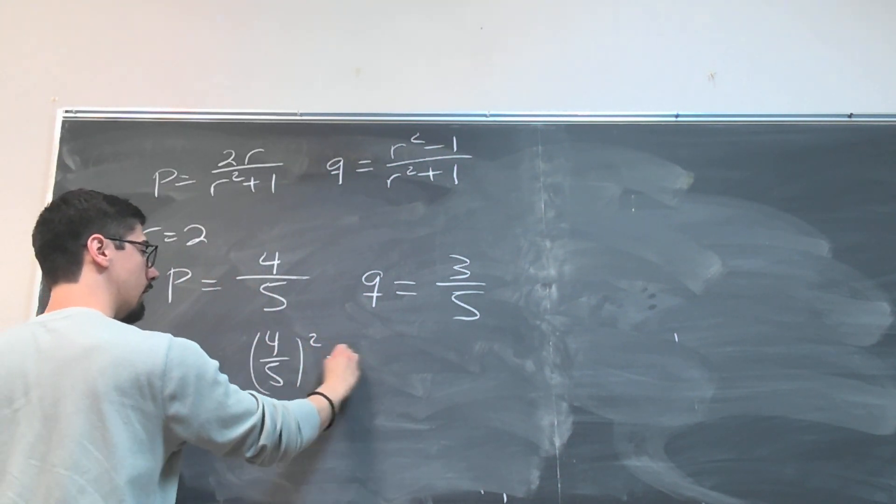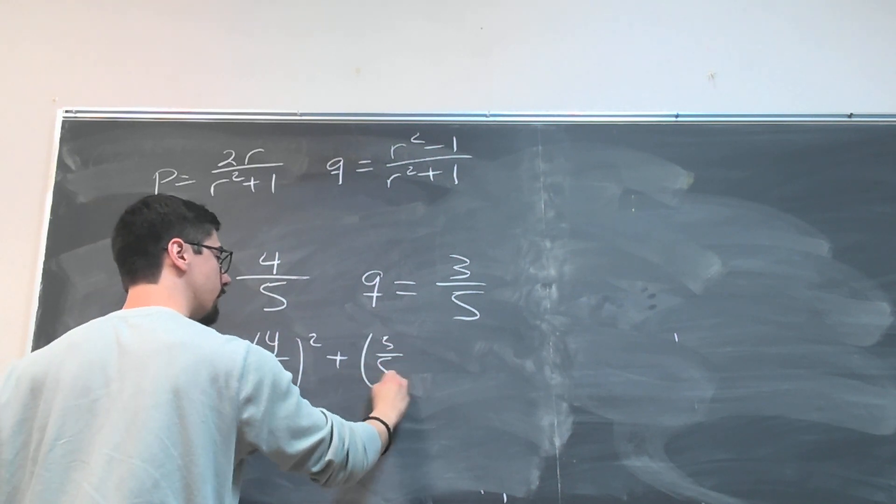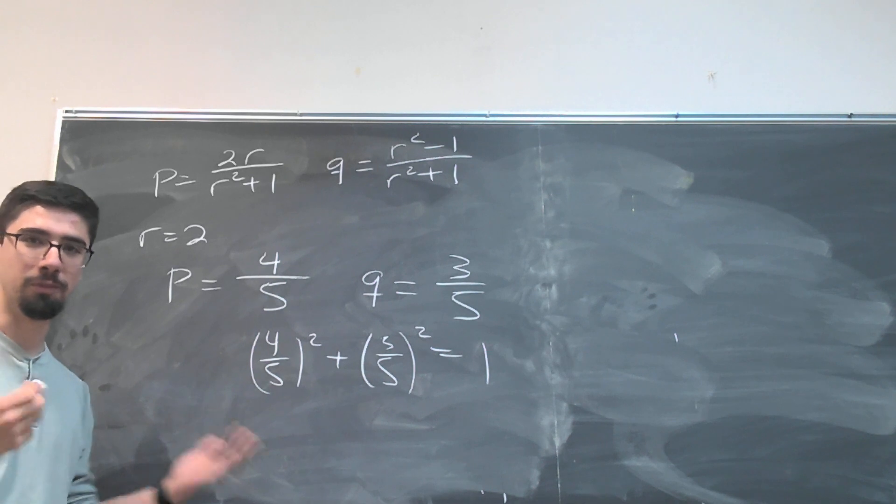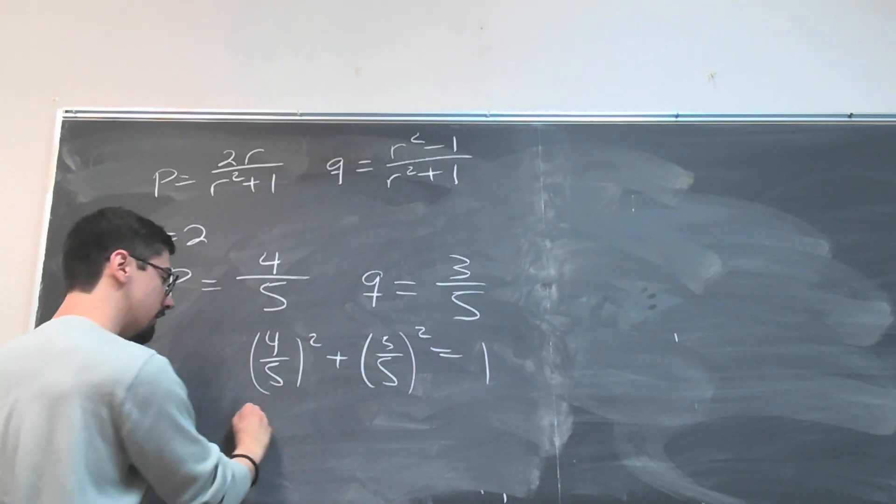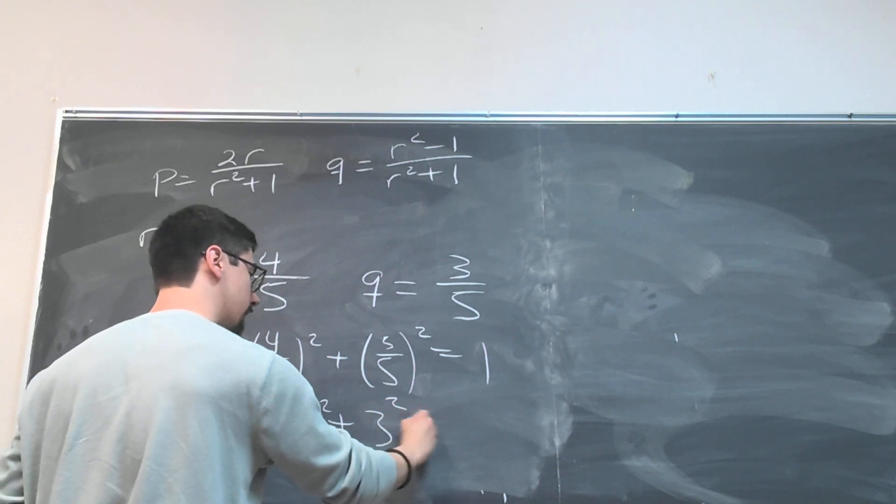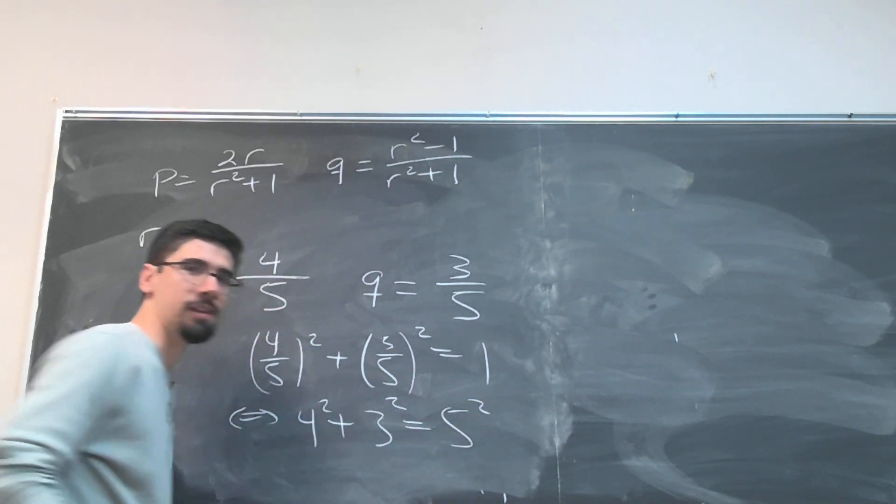And so this gives us (4/5)² plus (3/5)² equals 1. Or as you might have seen before, if you're familiar with Pythagorean triples at all, this is the same thing as saying 4² plus 3² equals 5².